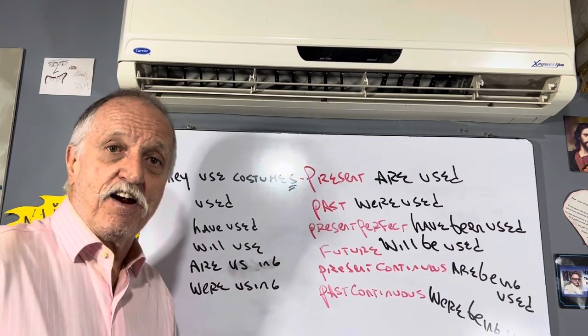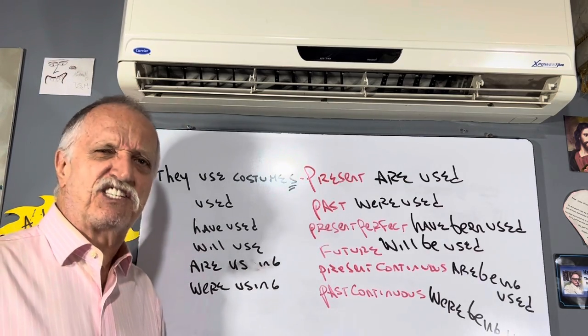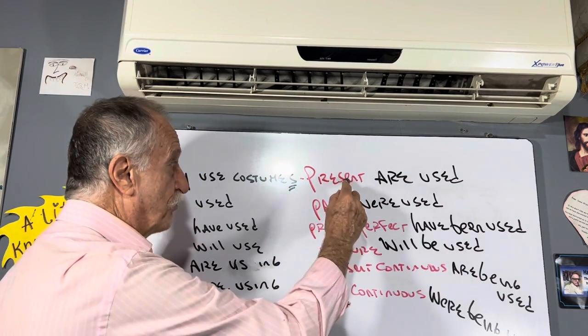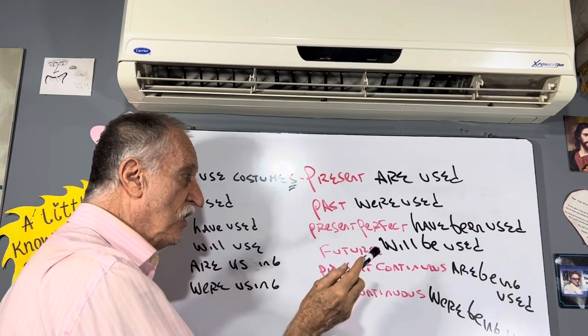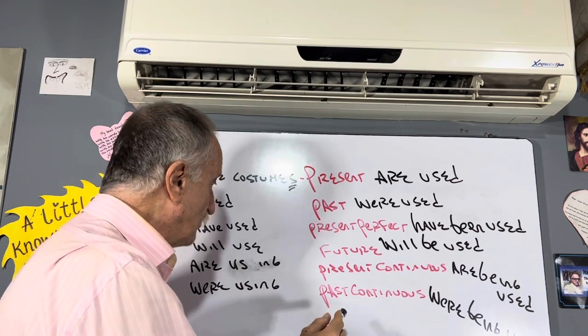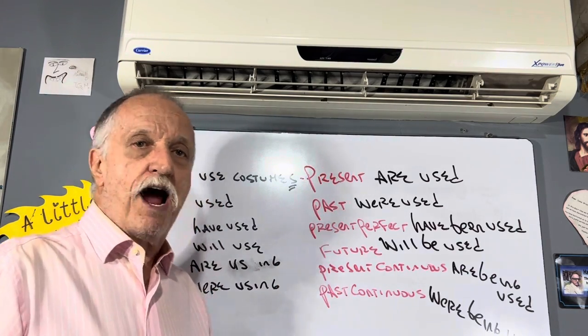Conjugando the verbos. Grammar's easy. It's formulas. Present, past, present perfect, future, present continuous, past continuous—all grammar.